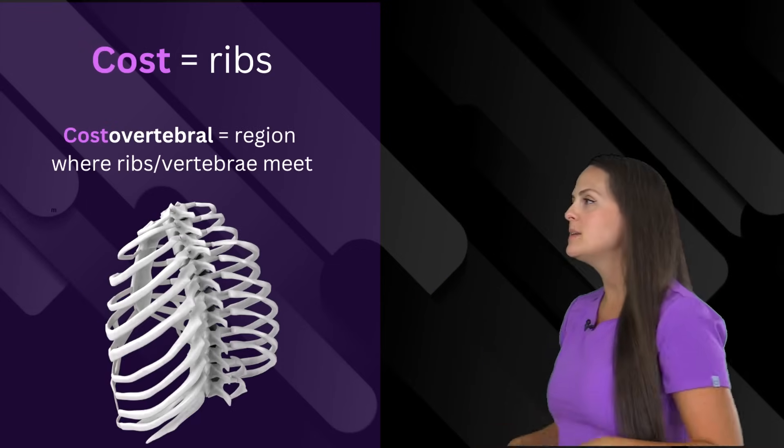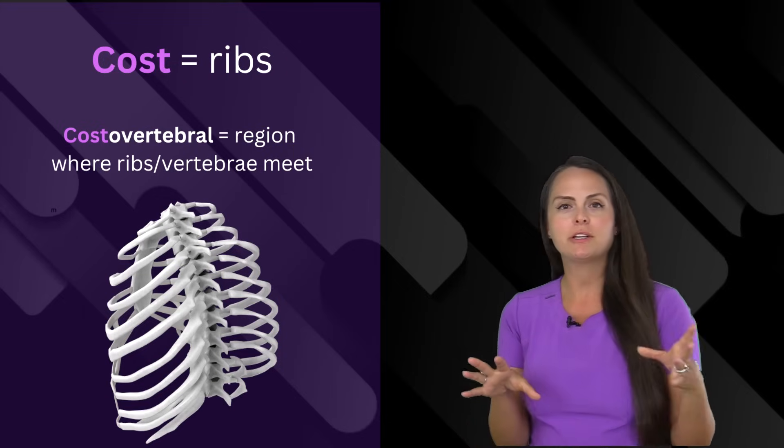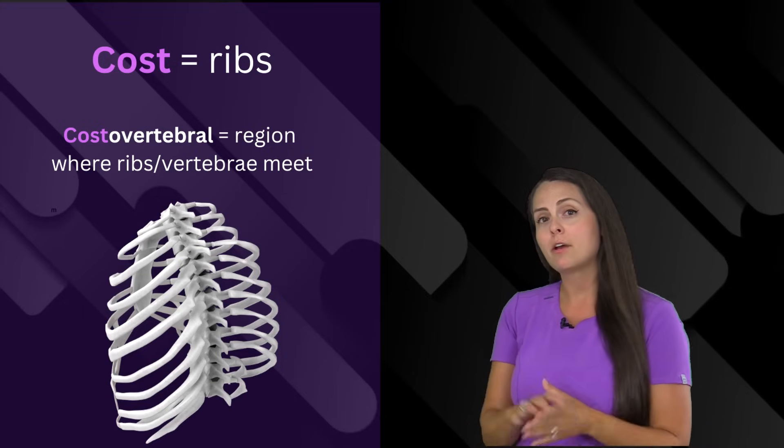Next up is cos, which means the ribs. Therefore, whenever I say the term costovertebral, I'm talking about the region where the ribs and the vertebra meet.